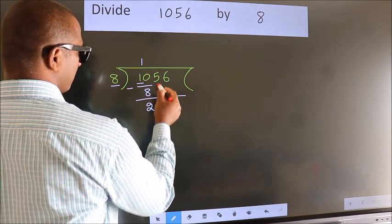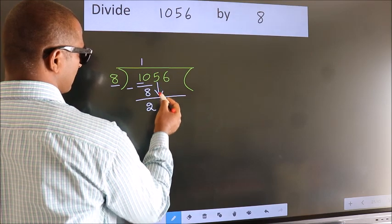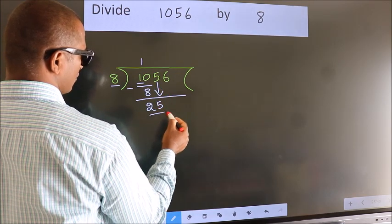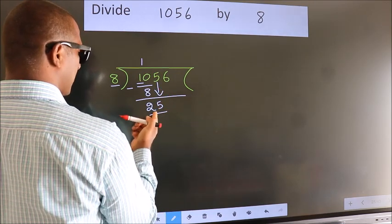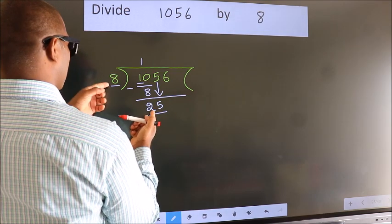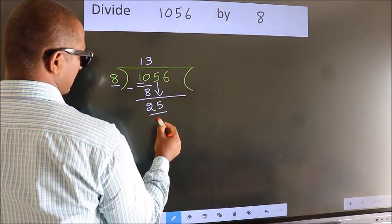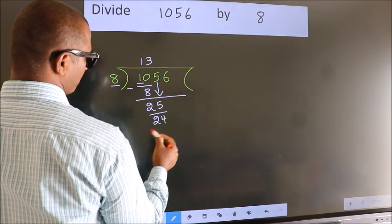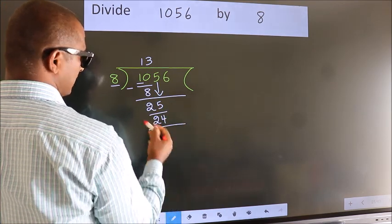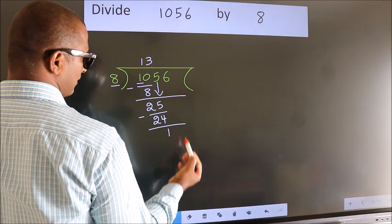After this, bring down the beside number. So, 5 down, giving us 25. A number close to 25 in the 8 table is 8 threes, which is 24. Now we subtract, and we get 1.